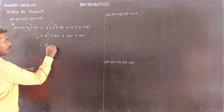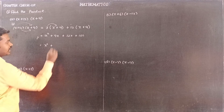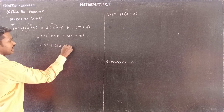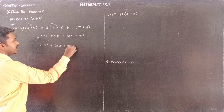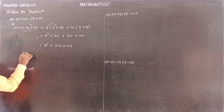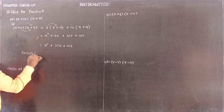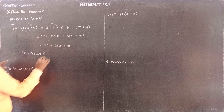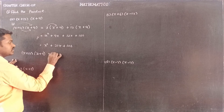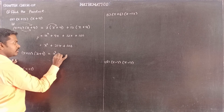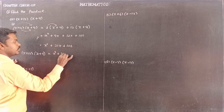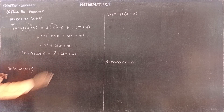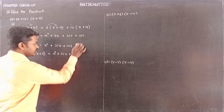So we have x squared plus 9x plus 12x, which equals 21x, plus 108. Therefore, x plus 12 into x plus 9 is equal to x squared plus 21x plus 108. Sorry — 108, not 48.